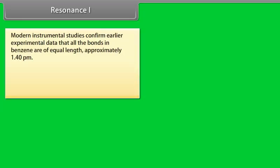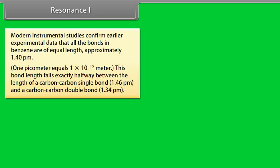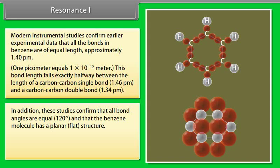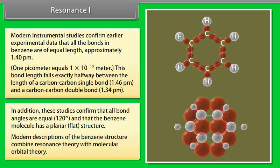Resonance. Modern instrumental studies confirm that all the bonds in benzene are of equal length — approximately 1.40 picometers (1 picometer = 1×10⁻¹² m). This bond length falls exactly halfway between the length of a carbon-carbon single bond (1.46 pm) and a carbon-carbon double bond (1.34 pm). These studies also confirm that all bond angles are equal at 120 degrees and that the benzene molecule has a planar or flat structure. Modern descriptions of the benzene structure combine resonance theory with molecular orbital theory.